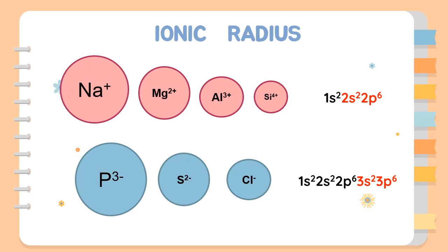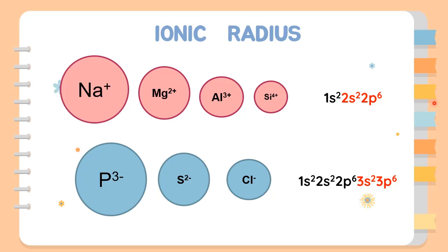In short, the ionic size decreases across a period but increases significantly from cation to anion. Ions in the same segment have the same electronic configurations, and their radii decrease as the atomic number increases across a period. By applying the knowledge of ionic radius, we can understand the trend of isoelectronic species.